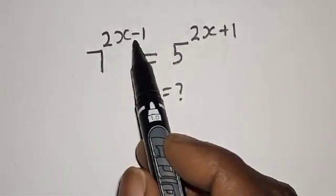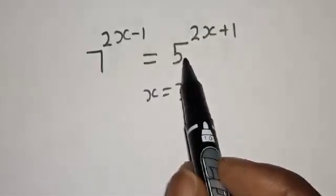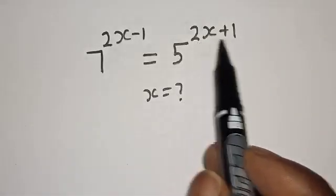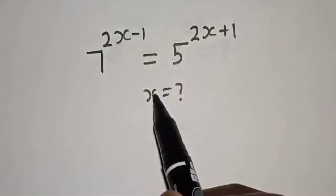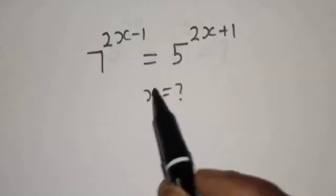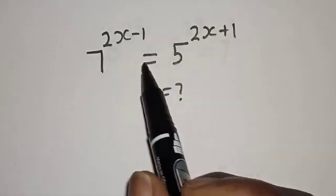7 raised to power 2s minus 1 is equal to 5 raised to power 2s plus 1. What is the value of s? Welcome to my class.